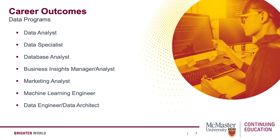Potential job titles you could come across would be things like data analyst, business data analyst, data reporting analyst, statistical analyst, database analyst, business insights manager or analyst, data quality manager or analyst, digital analytics, marketing analyst, data specialist, machine learning engineer, data engineer, or data architect. The salary range for data analyst positions is roughly about $40,000 to $70,000 annually. The salary range for machine learning or data science roles is about $60,000 to $100,000, or $130,000 for data architect positions.